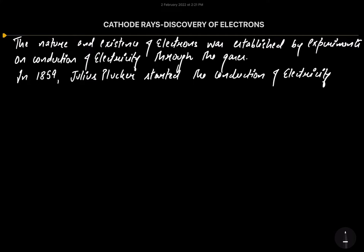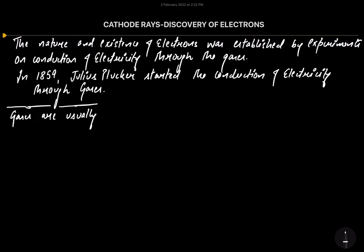Now, the point is that gases are usually poor conductors of electricity at ordinary or high pressures. Due to this, Julius Plucker conducted his conduction experiment in a discharge tube, where pressure can be minimized.